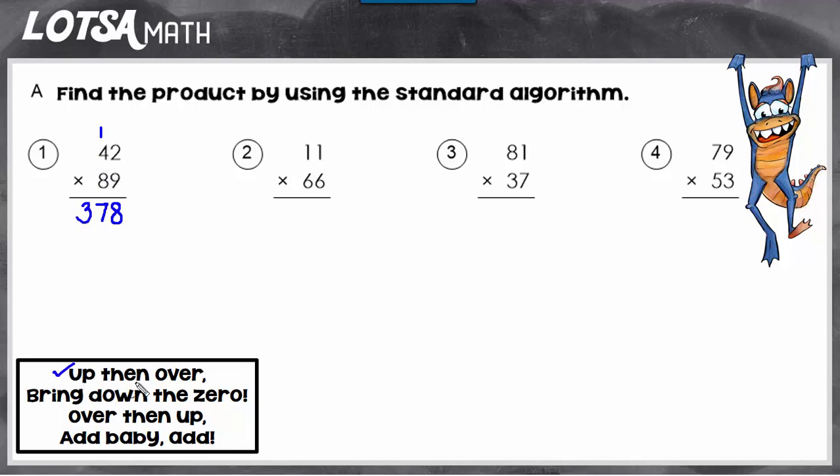So that's the first part, up then over. The second part says bring down the zero. So what that means is we're going to put a zero in the ones place. And we do that because the next number that we're going to be multiplying is 8. We're going to use the number 8 to multiply. However, the number actually has a value of 80. So if we bring down that zero, anytime we multiply with 8, it's going to be just like multiplying with 80.